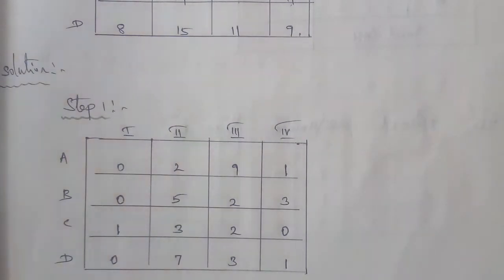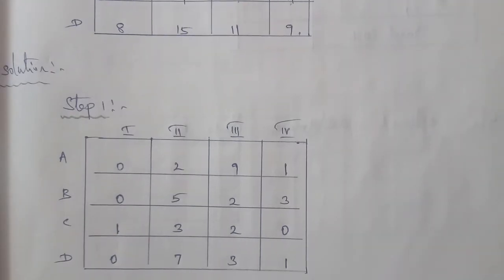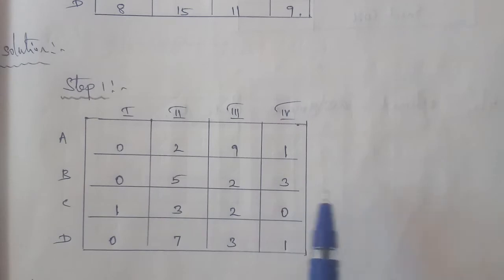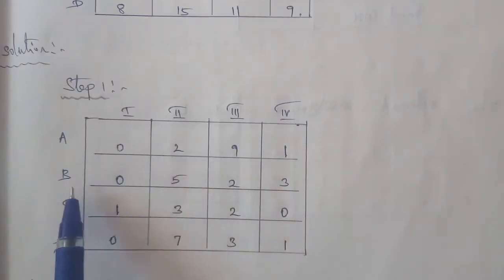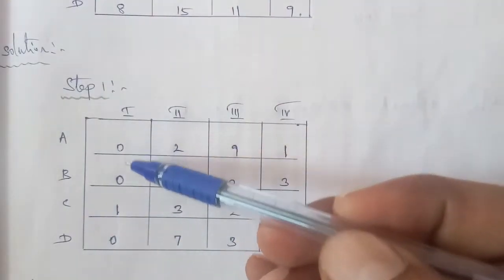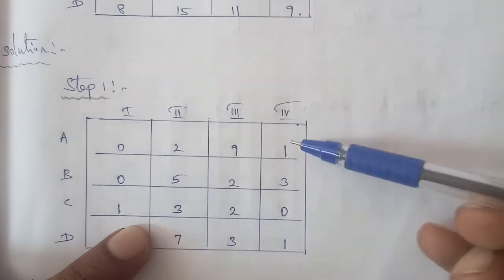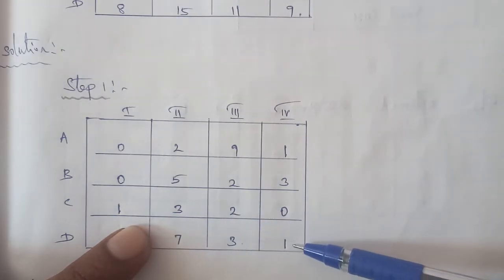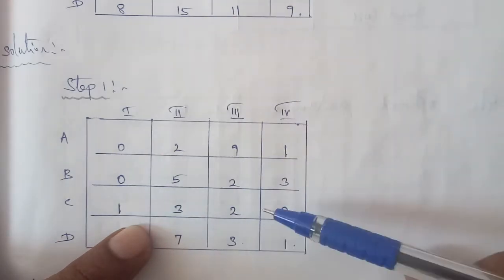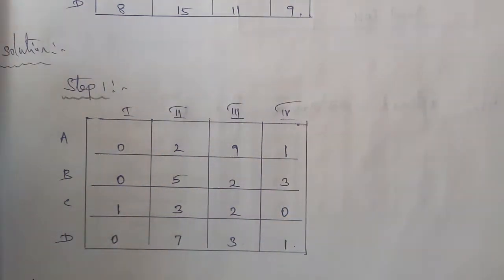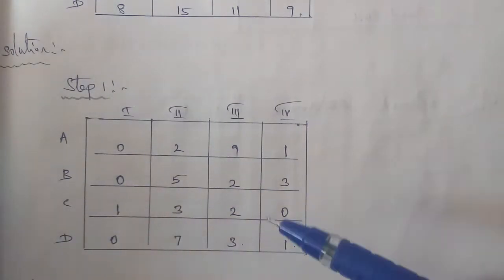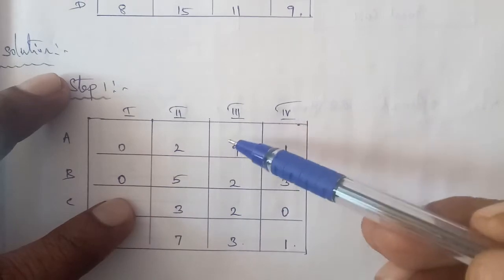Now check each row and each column for at least one zero. Looking at each column: the second column and fourth column have zeros. Now for column reduction, find the least number in each column and subtract.